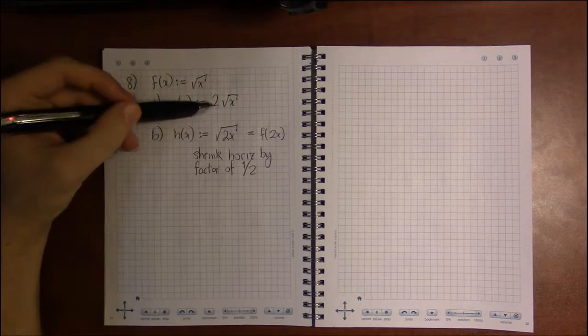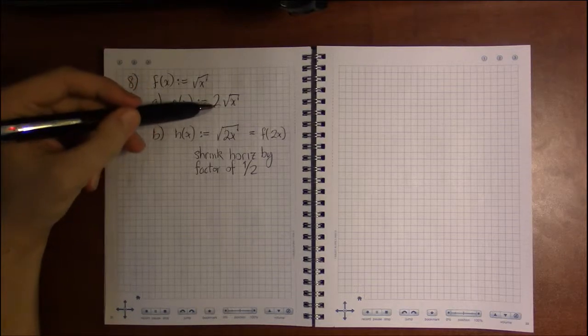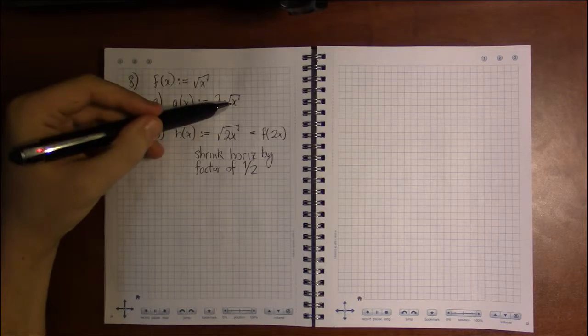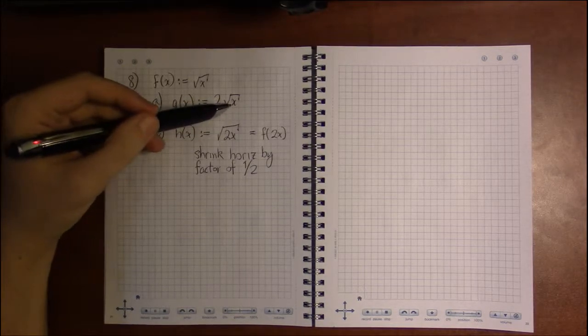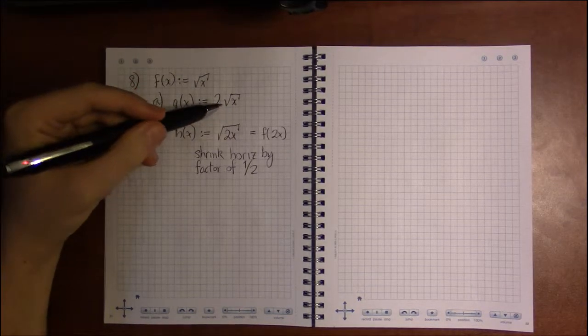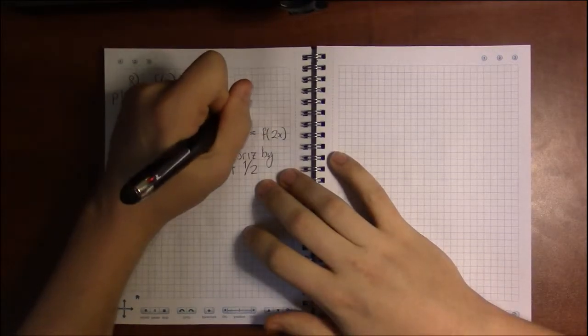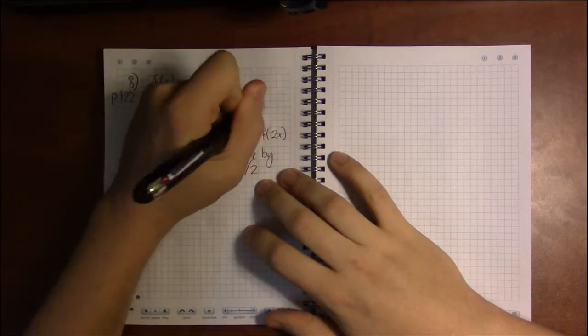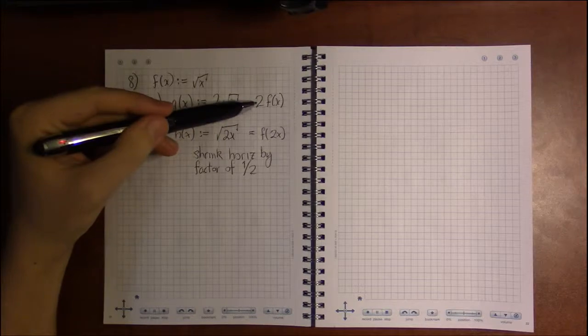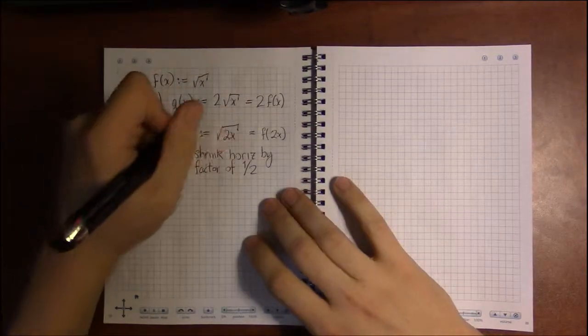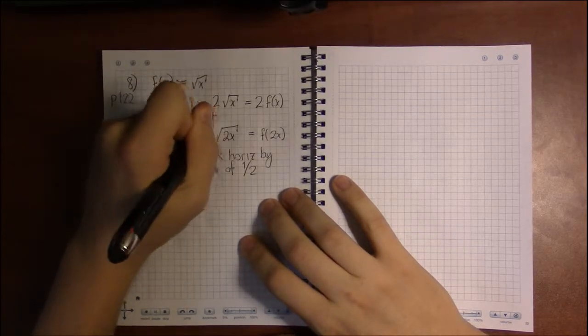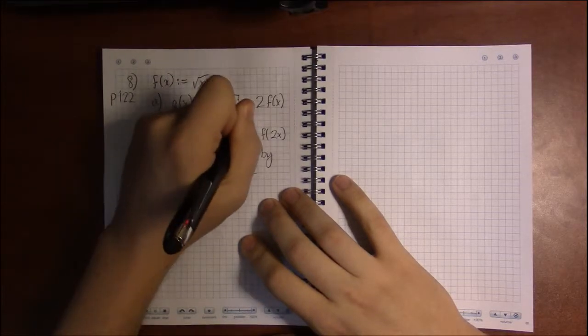And g here, the 2 isn't as close to the x as it could be. We could move the 2 inside the square root like it is here, and that would be as close as it could get. So this 2 here is not a horizontal transformation. It's a vertical transformation. And since it's multiplication, it's a vertical stretch or shrink. And vertical does exactly what you want it to do. So this is going to stretch by a factor of 2.